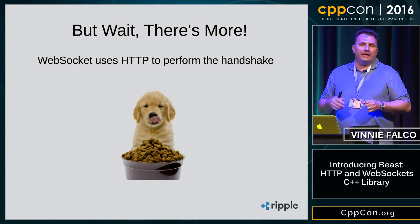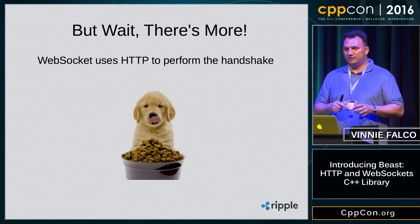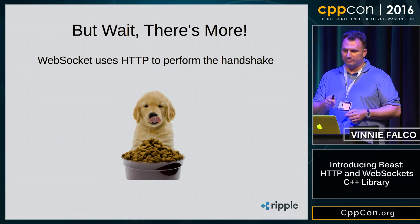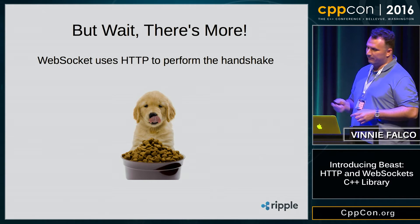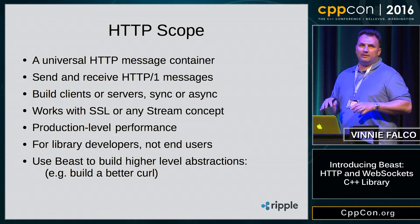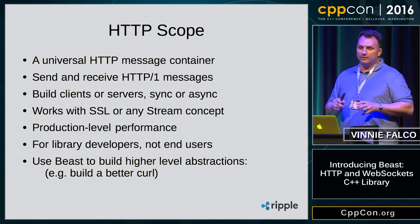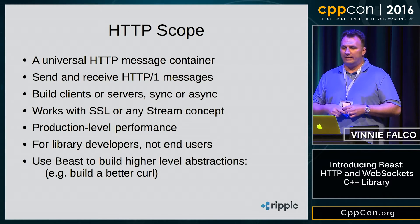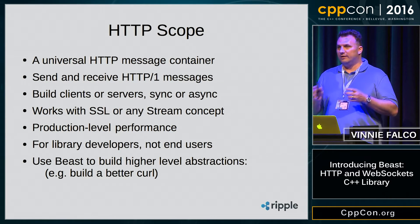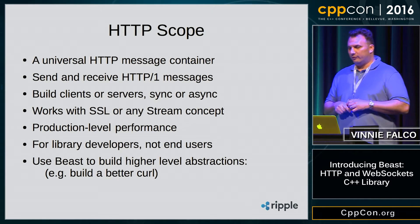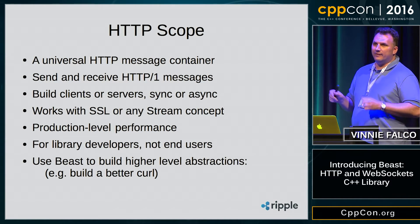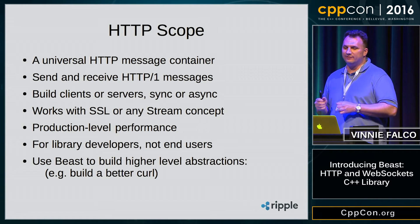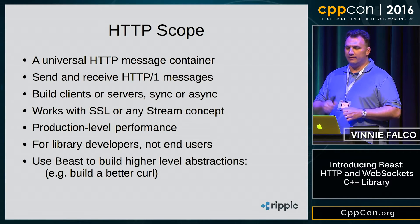HTTP requests and responses are used in the WebSocket handshake, so the library also exposes those HTTP implementations to you, so you can do HTTP in your own C++ programs. The scope of the library's HTTP support is to provide a universal message container that can store a complete HTTP message including the headers, request or response specific fields, and the message body. The container is copyable and movable. There are actually two protocols for HTTP now: HTTP 1 (covering 1.0 and 1.1) and HTTP 2. The current Beast implementation serializes and deserializes HTTP 1 messages only, with future plans for 2.0.